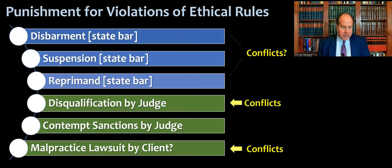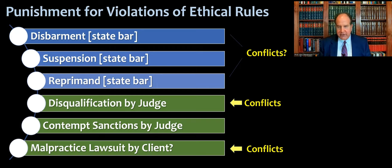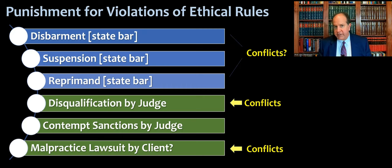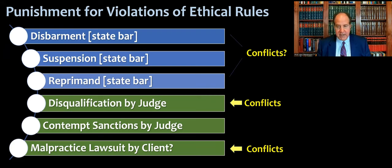I want to clarify for my students early in the course: not every violation of the rules is going to result in disbarment. The state bar brings sanctions. The most severe is disbarment — that's where they revoke your law license. Sometimes it's permanent, but most often it's for two or five years, at the end of which you're back to square one of applying to be a lawyer and will probably have to retake the bar exam.